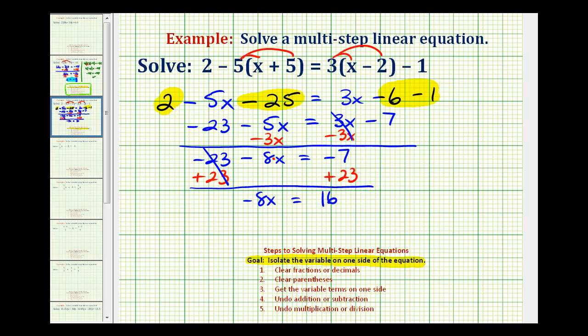And then the last step, because negative eight x means negative eight times x, we're going to divide both sides by negative eight. So negative eight divided by negative eight would be positive one times x, which is x. And on the right side we have positive sixteen divided by negative eight, which is equal to negative two.